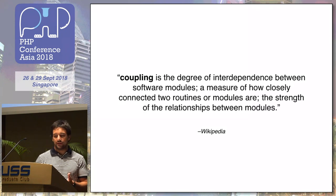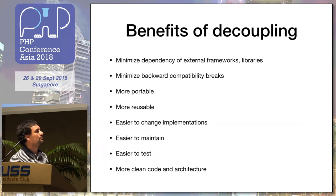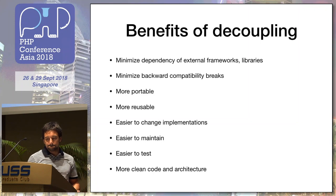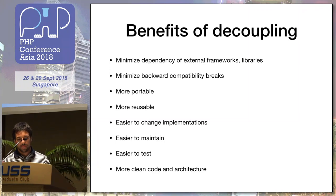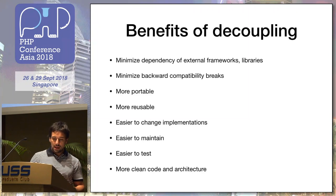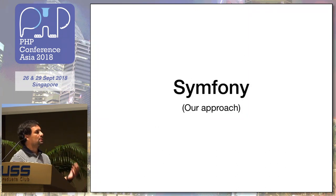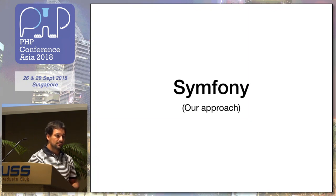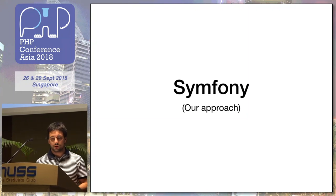What can we do to avoid that? One of the benefits of decoupling — it's easy to see in a diagram, but in code, when you have a lot of mixed spaghetti code, it's not easy to see these benefits. Basically, we make our code work in every environment and every framework. Our code was using Symfony, so I'll focus more on Symfony, but it applies to every framework and every library.